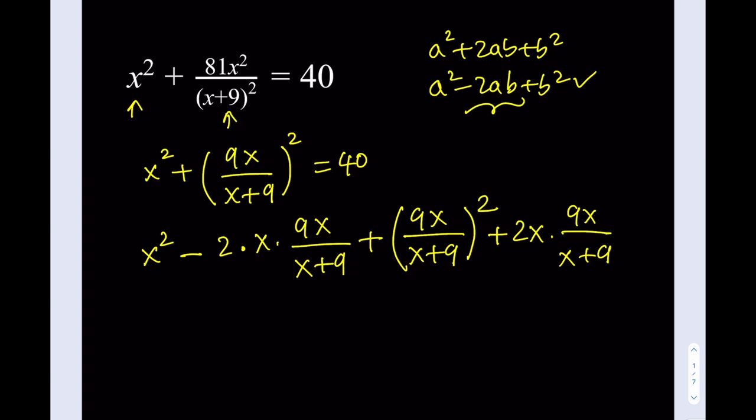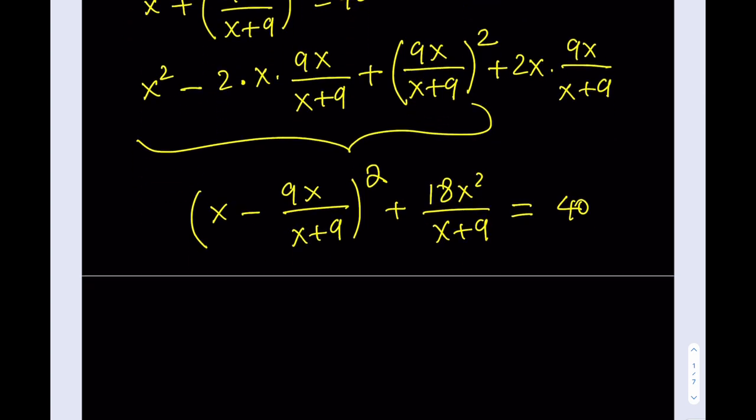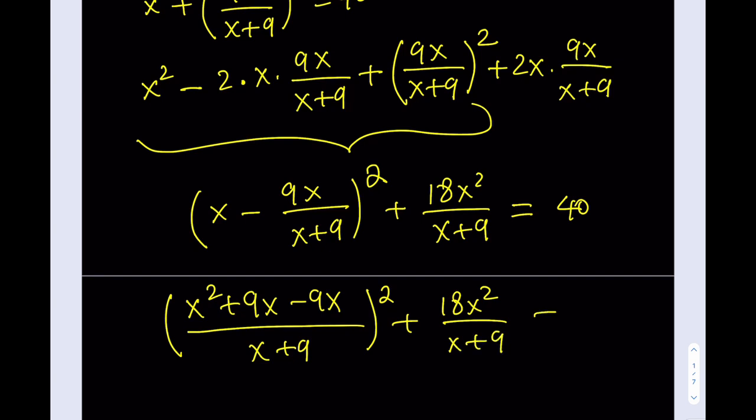So we're going to take this and put it as a perfect square. It's going to look like x minus 9x over x plus 9 squared. You can see here a squared minus 2ab plus b squared turns into a minus b quantity squared. Plus, if I multiply these, it's going to give me 18x squared over x plus 9, and the whole thing is equal to 40. This is our first method.